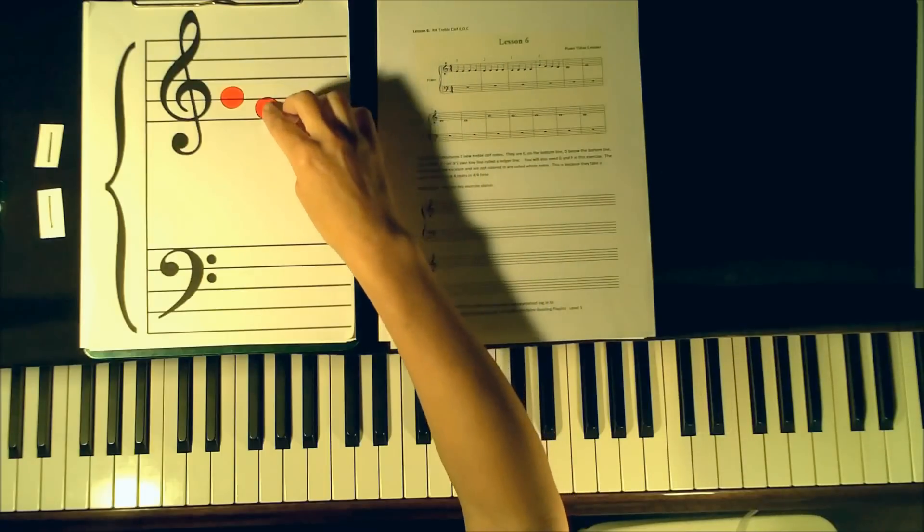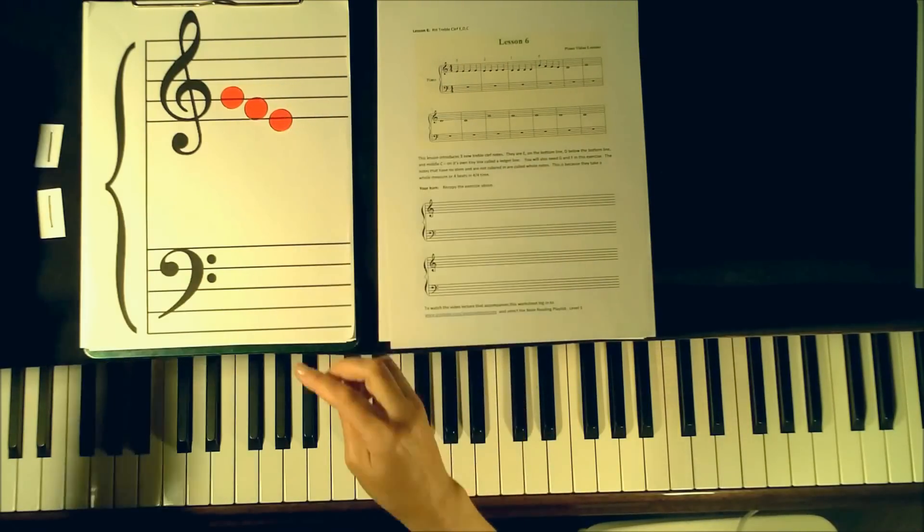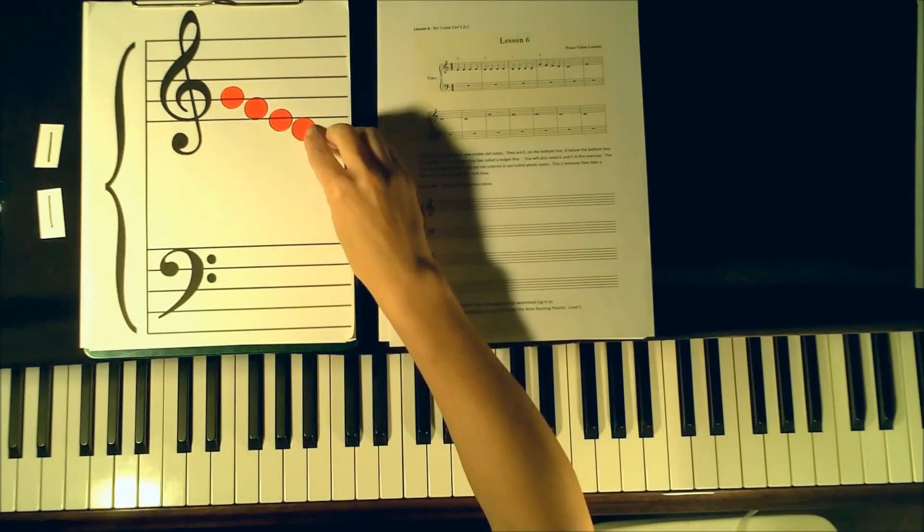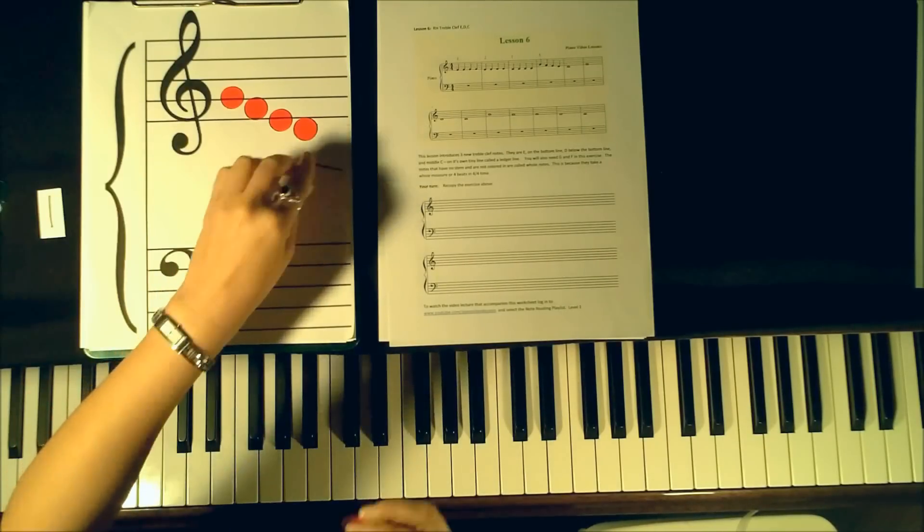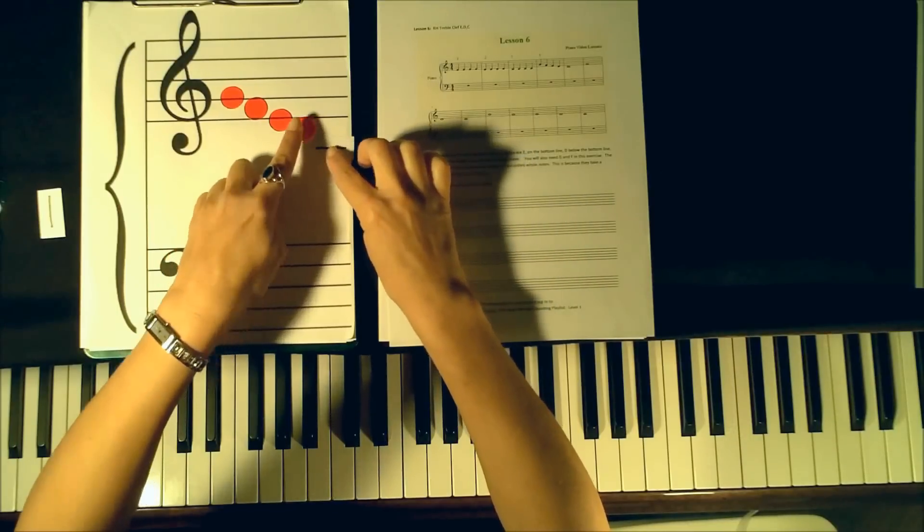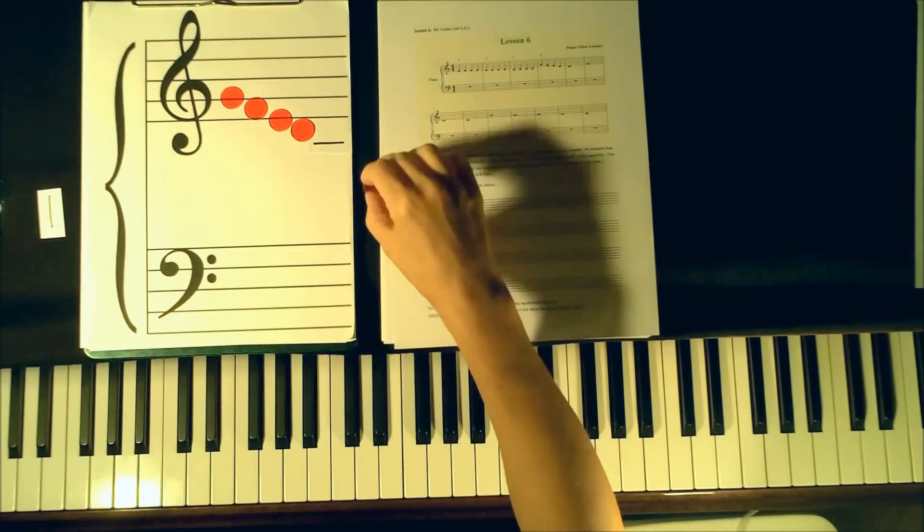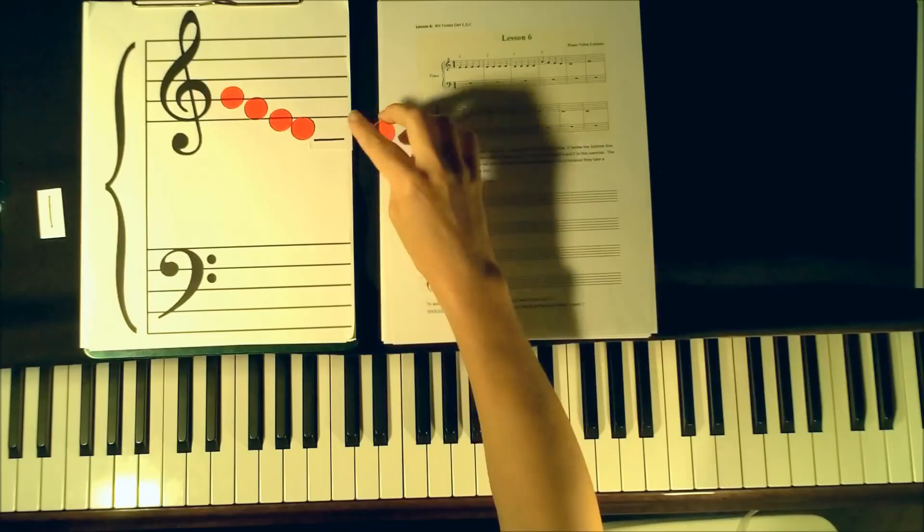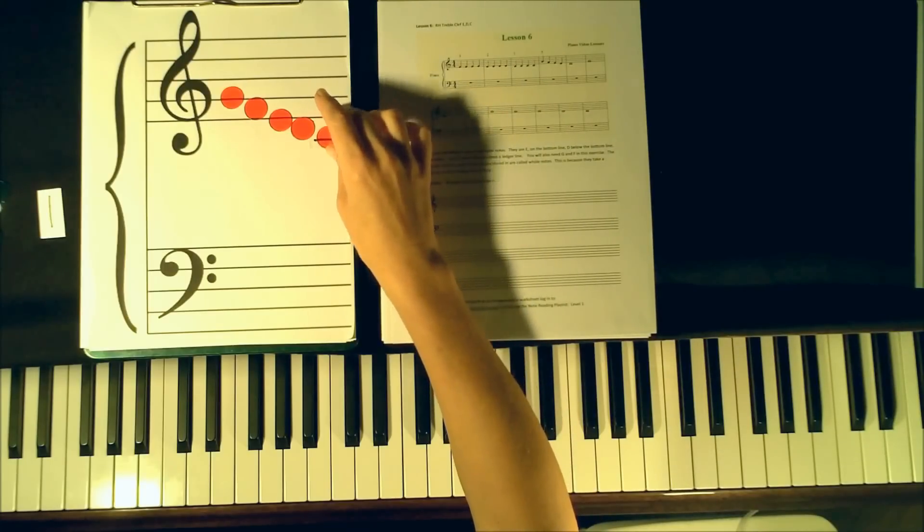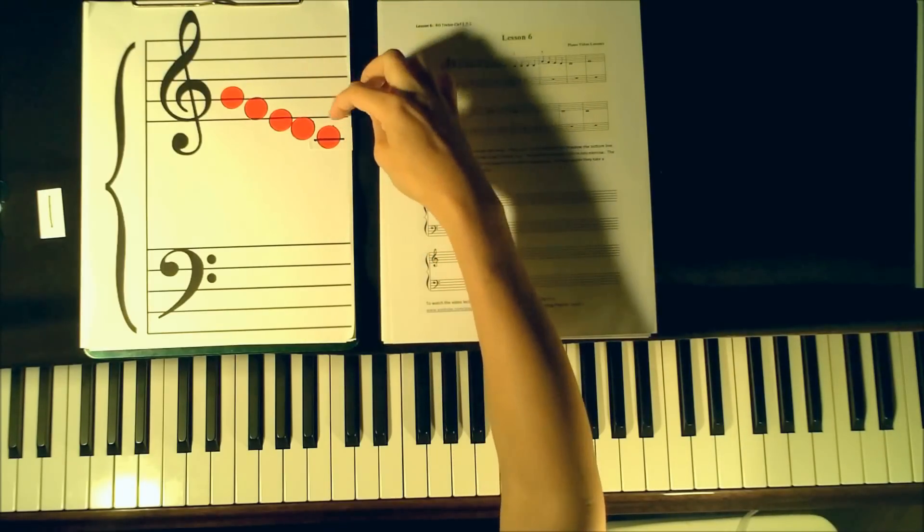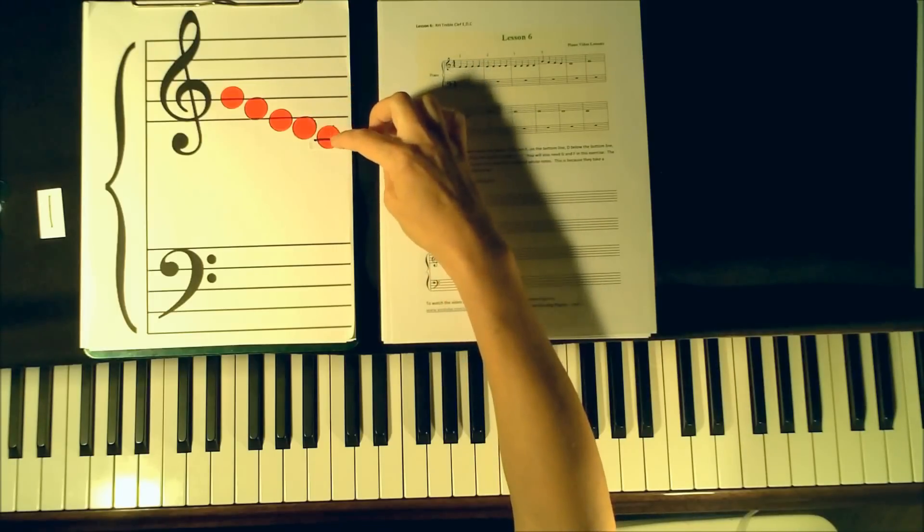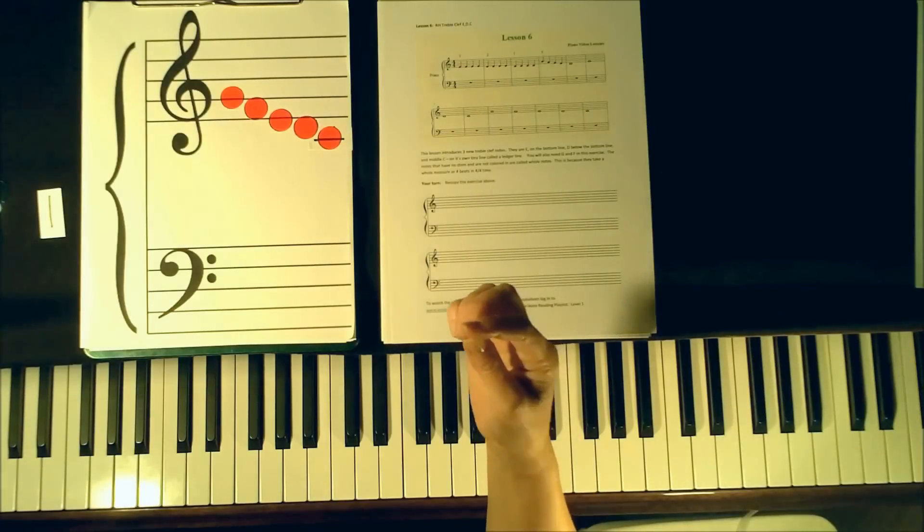We're also going to learn to read a note lower than E, and that note is D. And we're going to learn to read a note one note lower than D, and that note requires its own line. In order for us to locate it, we call this little line a ledger line. It's a short line that's drawn outside of the regular staff lines, and it just helps us to locate the note and see that it is indeed a neighbor of this previous space note.